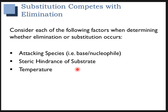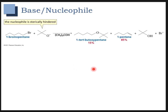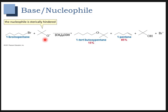The first thing we're going to look at is the base/nucleophile. As you can see in this example, when we have a sterically hindered base or nucleophile, it's going to do more elimination and less substitution. An SN2 reaction is dependent on steric hindrance, and if this base is attacking from the back, there's steric hindrance. So the bulkier the nucleophile becomes, the less it's a good nucleophile and the more it becomes just a base.